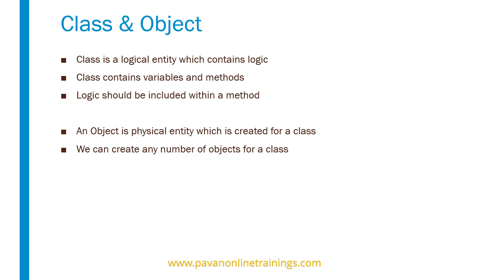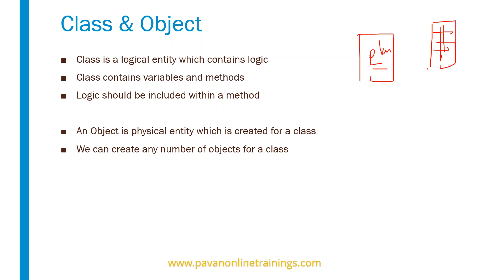An object is a physical entity which is created for a class, and we can create any number of objects for a class. A class is a blueprint of an object. For example, if you want to construct a house, you will have some blueprint — this is a plan. This blueprint doesn't occupy any memory location, but the building constructed from it does occupy space. Similarly, a class is a blueprint that contains logic and methods but doesn't occupy memory space, whereas an object does.